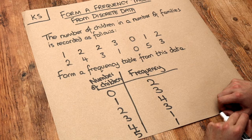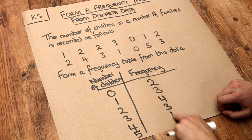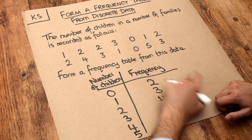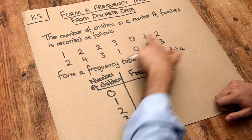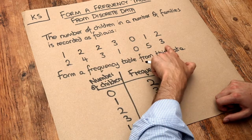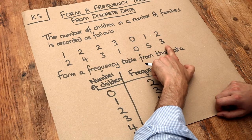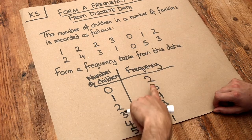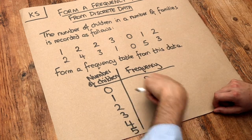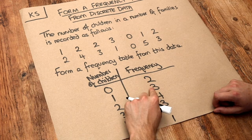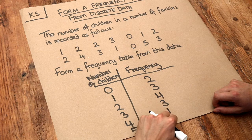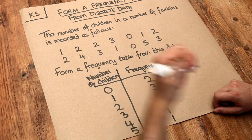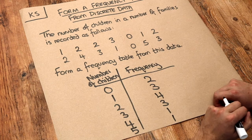And you may want to check that these frequencies add up to how many values you have. Counting all the families, we have fourteen families in total. Now do these frequencies add up to fourteen? Two plus three is five, plus four is nine, plus three is twelve, thirteen, fourteen. Yes, it does add up to fourteen.